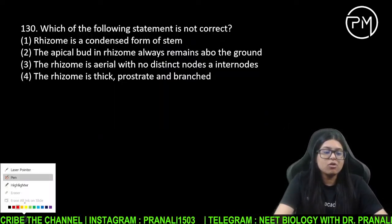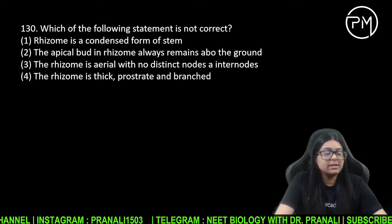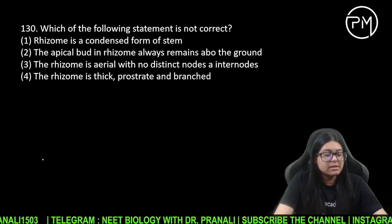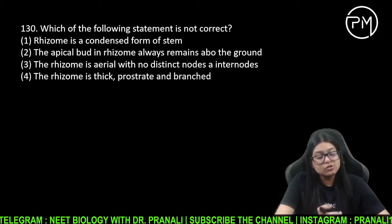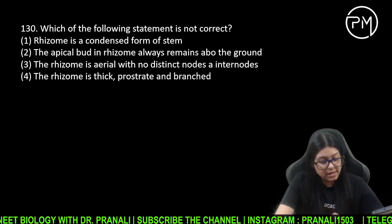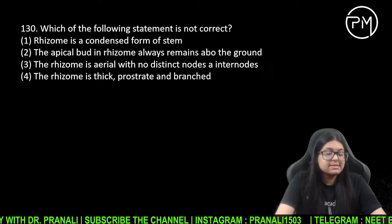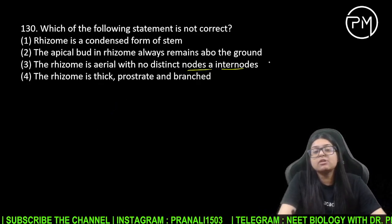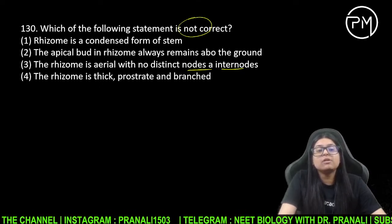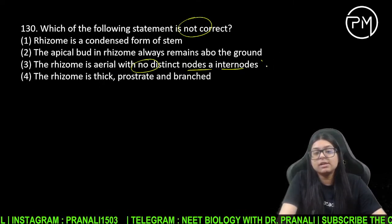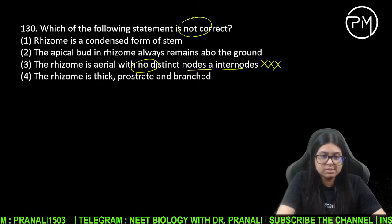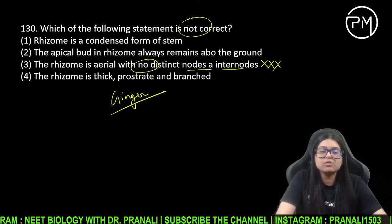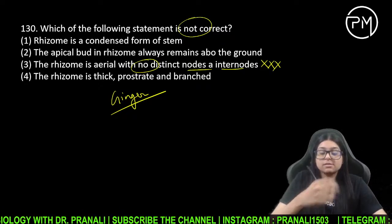Which one is not correct? Rhizome kya hoti hai — rhizome stem ka modification hota hai. Toh wahan par nodes aur internodes toh honge. Jo bola raha hai ki nahi honge — woh galat bol raha hai. Ginger ki photo dekhi hamne, usmein nodes aur internodes hain.